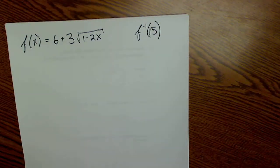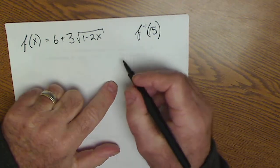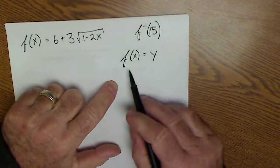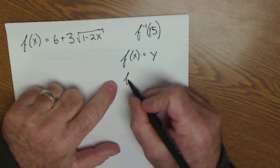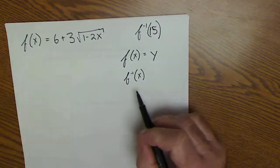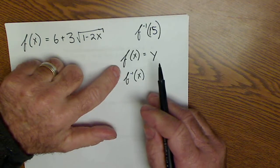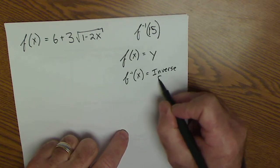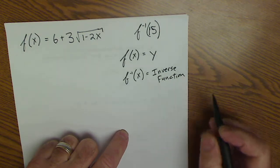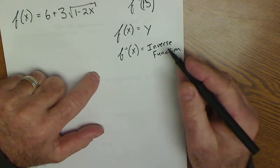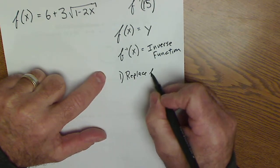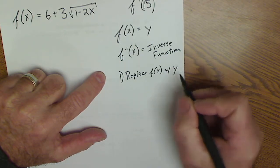Hey, Jonathan here at Colfax Math. I'm going to go over finding inverses with a five-step process. The most important thing to note is that f(x) is your y-value, so f(x) and y are interchangeable. f⁻¹(x) — that negative one is not an exponent — it is notation saying it's an inverse function.